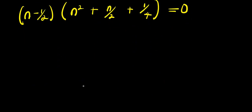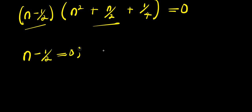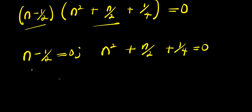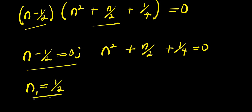We can equate each factor to 0. Setting n minus 1 over 2 equals 0 gives n equals 1 over 2 — that is our first solution, n₁. For the second factor, n squared plus n over 2 plus 1 over 4 equals 0, we need to solve this.